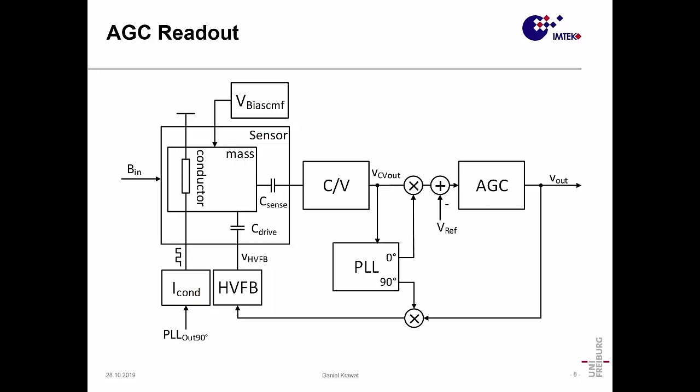This automatic gain control extracts the amplitude of the signal and it is then modulated again with the 90-degree phase signal of the PLL to generate some high-voltage feedback signal that is used to generate the feedback forces. This signal is also used to generate the conductor current and ensures that we operate in resonance all the time. This has the distinct advantage that we can have much higher bandwidths and still ensure that we have always the highest resolution possible of the system.